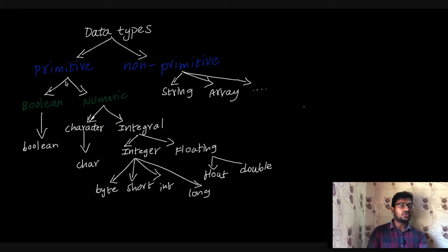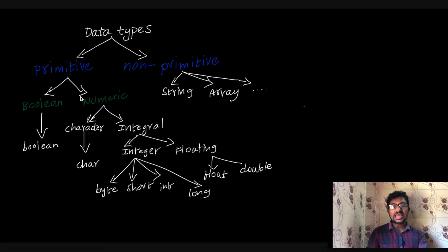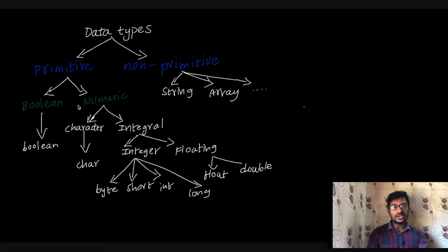If you don't have any specific programming language need, you can use primitive data types. Primitive data types are non-primitive, which means complex data types. Now, with primitive data types, we can classify two categories: one is boolean and one is numeric.